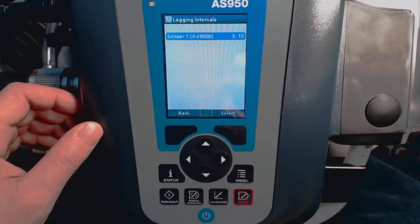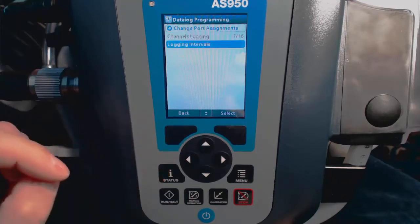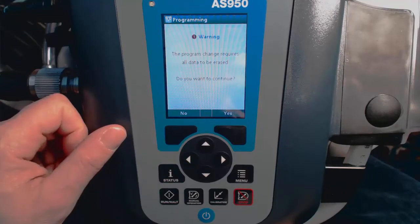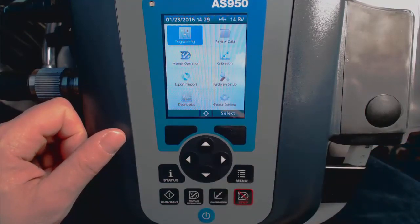Now we'll select Back a couple times, and this will offer us the opportunity to change other parameters on other sensors if we have them connected up. And then we'll get this warning message acknowledging the loss of data if we continue, and that's OK.